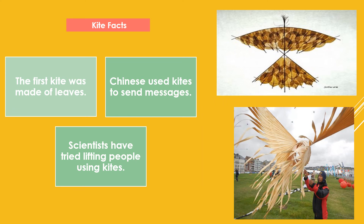Here are a few interesting kite facts for you children. Do you know, in olden times when man did not know how to make paper, kites were made up of leaves. The first kite was made up of leaves. You can see in the picture on the top right hand side corner, there is a kite which looks like a butterfly but it is actually a kite made up of leaves. Right below that is a picture of a man holding a kite which looks like a huge bird, but it is actually a kite made up of big leaves of a tree.